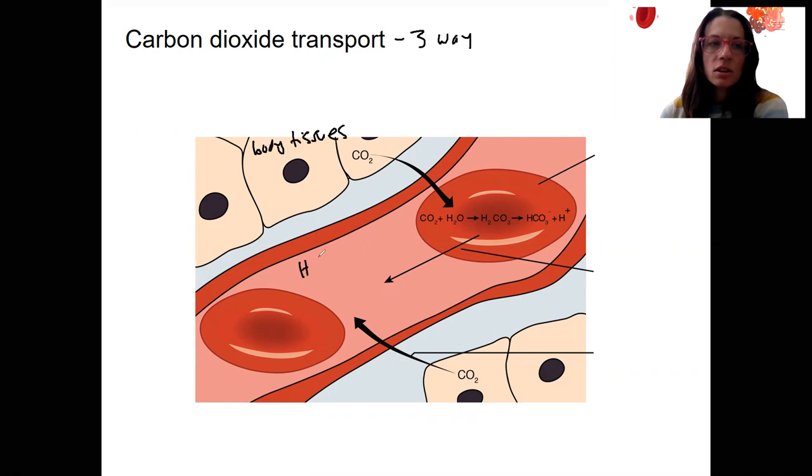That's HCO3, dissolved in the plasma. We'll see how it gets to that form next. That's called bicarbonate, and that's about 70%.